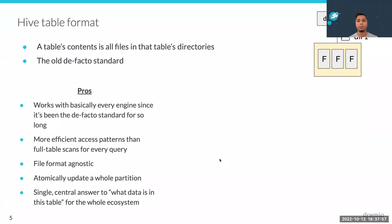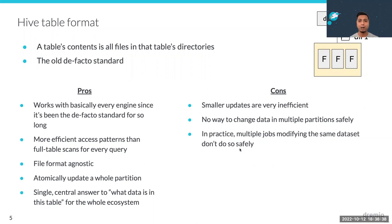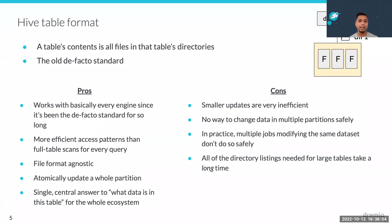You can also atomically update a whole partition — write new data into a new partition, and while writing, no one sees the changes. Then you atomically swap that reference in the metastore. The Hive Metastore became the single central answer to what's in the table — every engine and every user gets the same answer regardless of what they're using. However, disadvantages include: smaller updates are inefficient, since you can only atomically update a whole partition. Changing a few rows requires rewriting the entire partition.